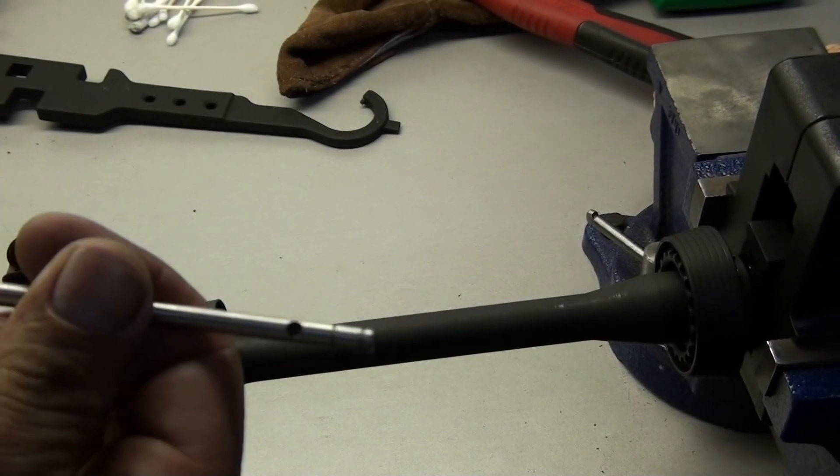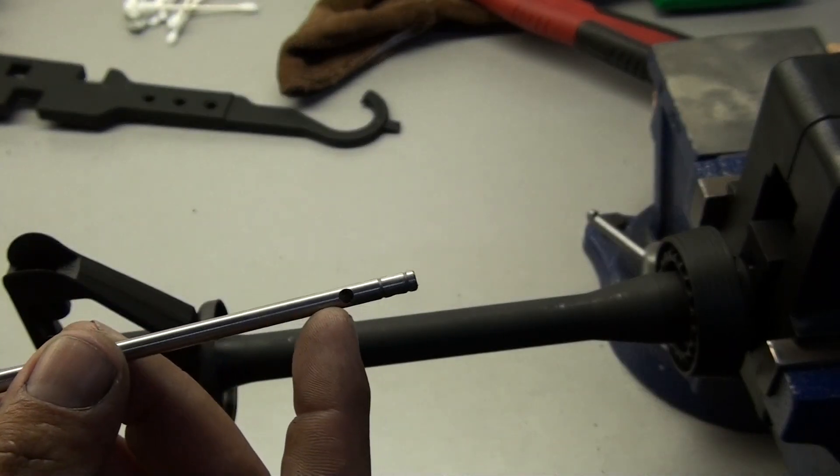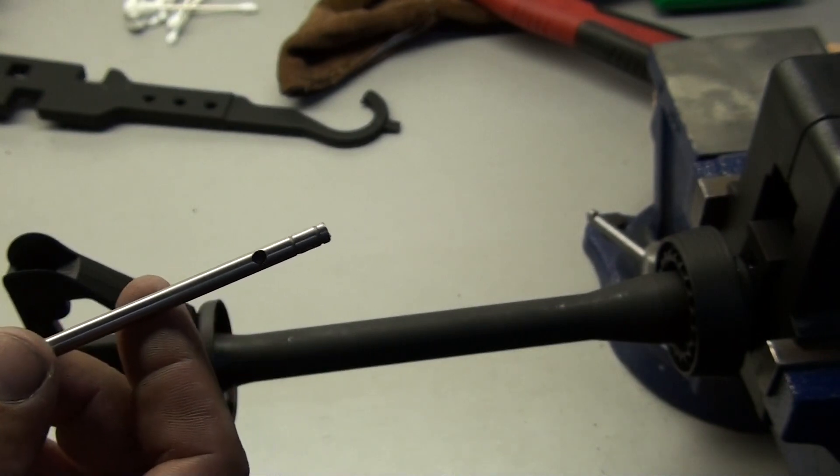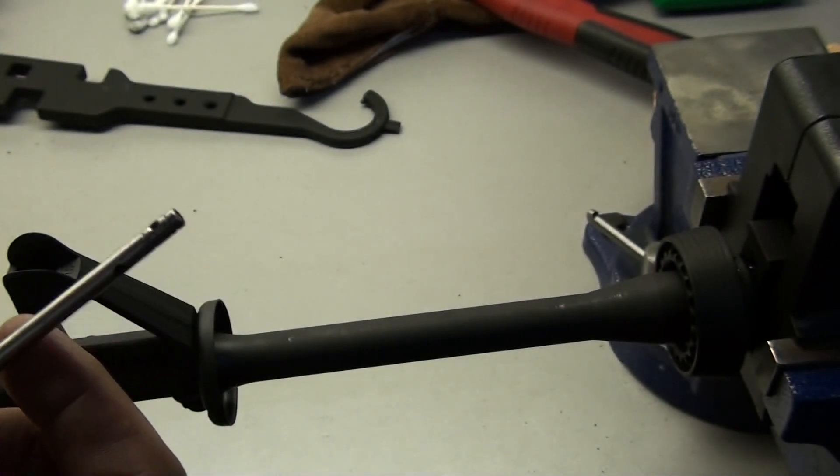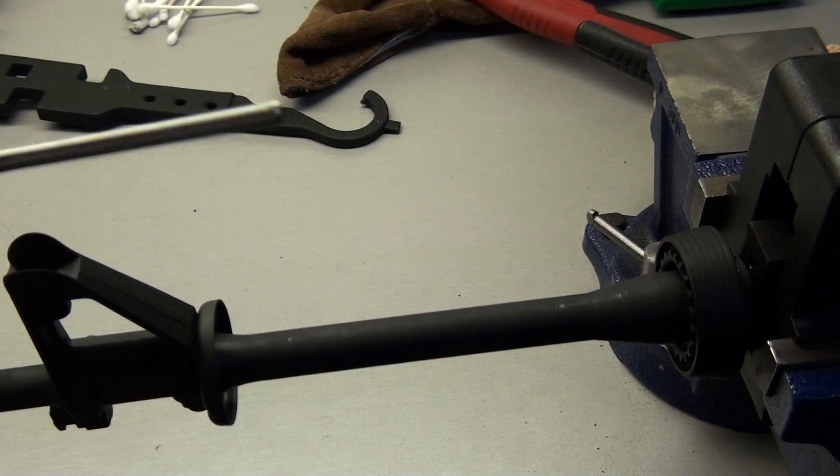All right, here's the gas tube. Like I said, there's a hole for the bottom for the gases to go back into the upper receiver and cycle the bolt. So here we go.